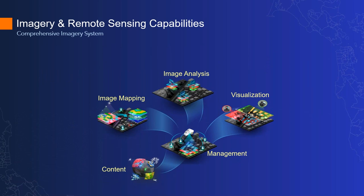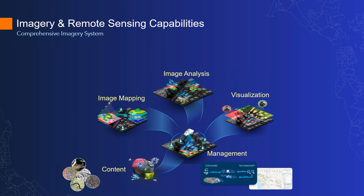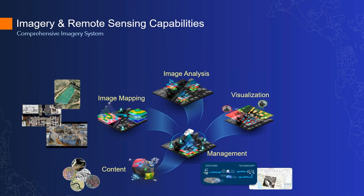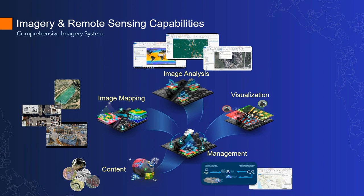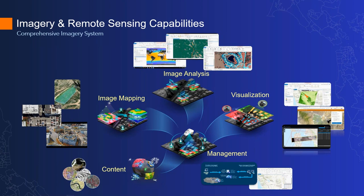ArcGIS is a massive system with lots of different capabilities, and imagery is certainly a very important capability that we've been developing extensively for over the last 15 years. We break it up into five key sub-capabilities. First, content — the content available within ArcGIS. Second, management — how we manage all the imagery within your organization and make it accessible. Third, image mapping — taking imagery and creating derived products such as orthophotos and digital surface models. Fourth, image analysis — extracting information from imagery, including deep learning. Fifth, visualization and exploitation — combining imagery with vector and GIS data to create applications for human interpretation.